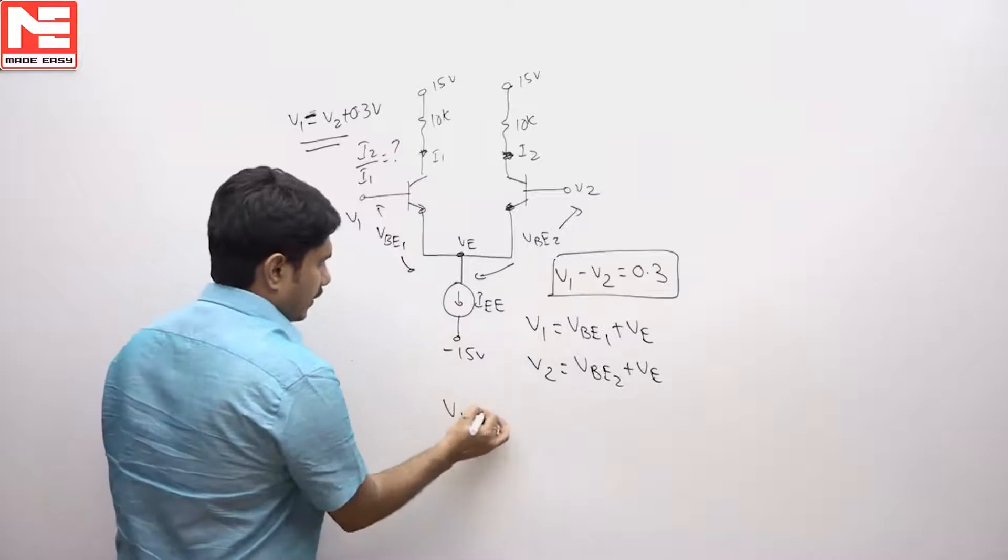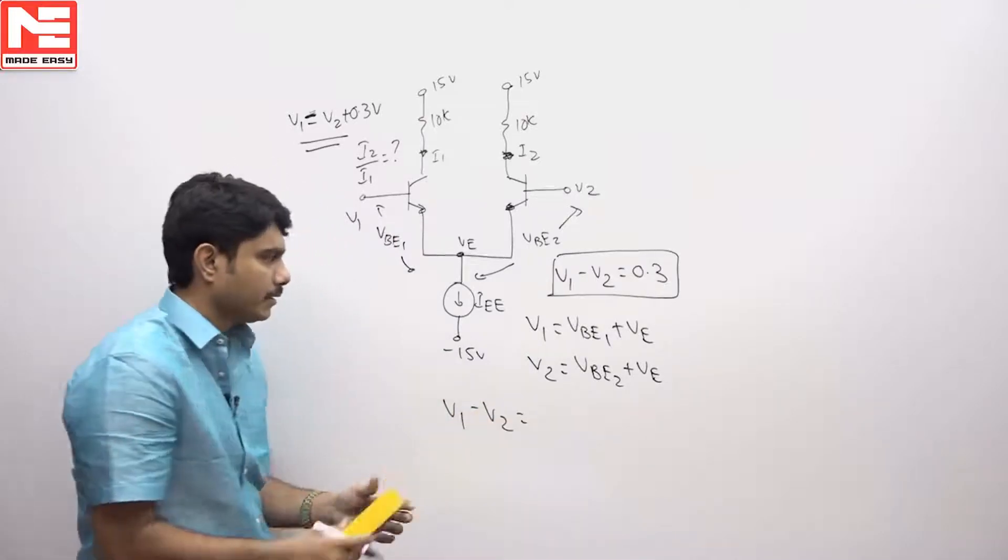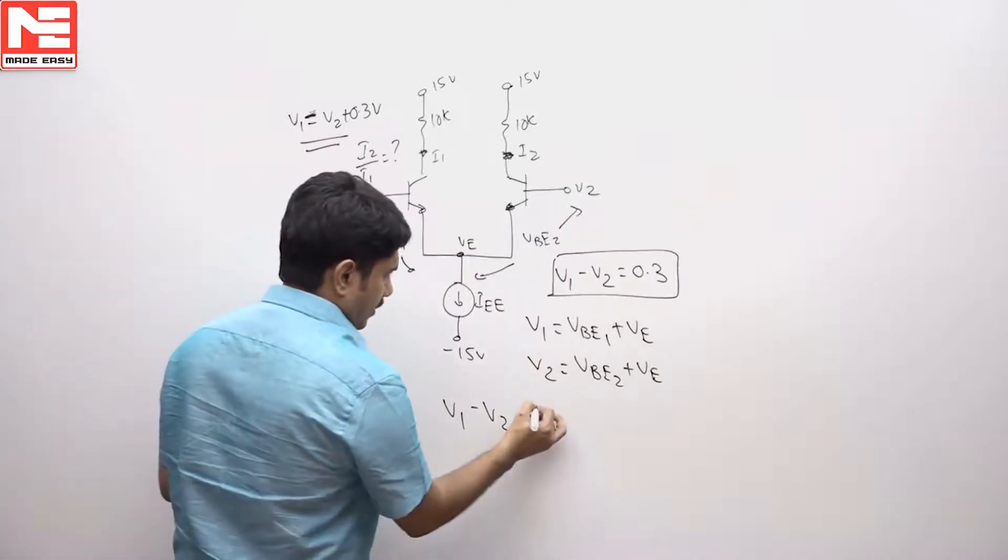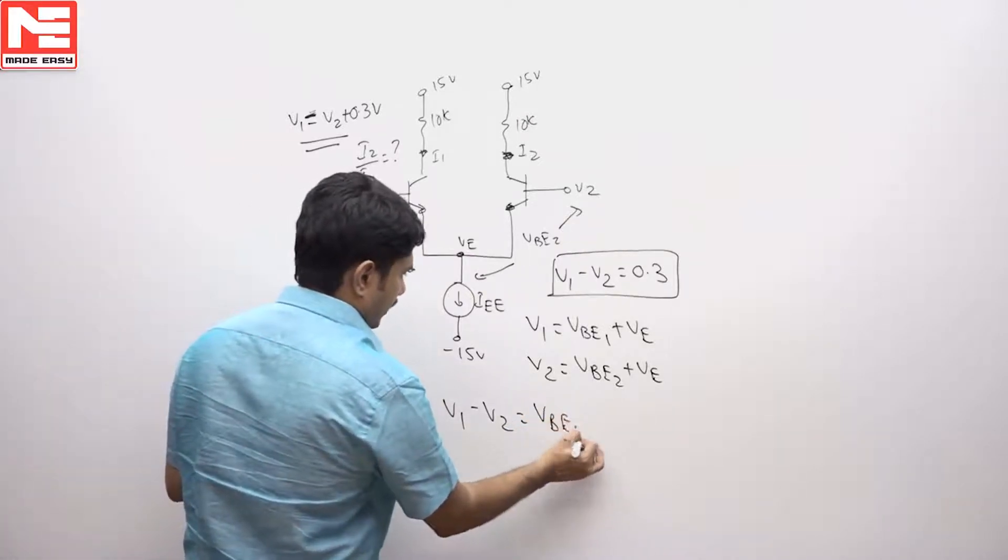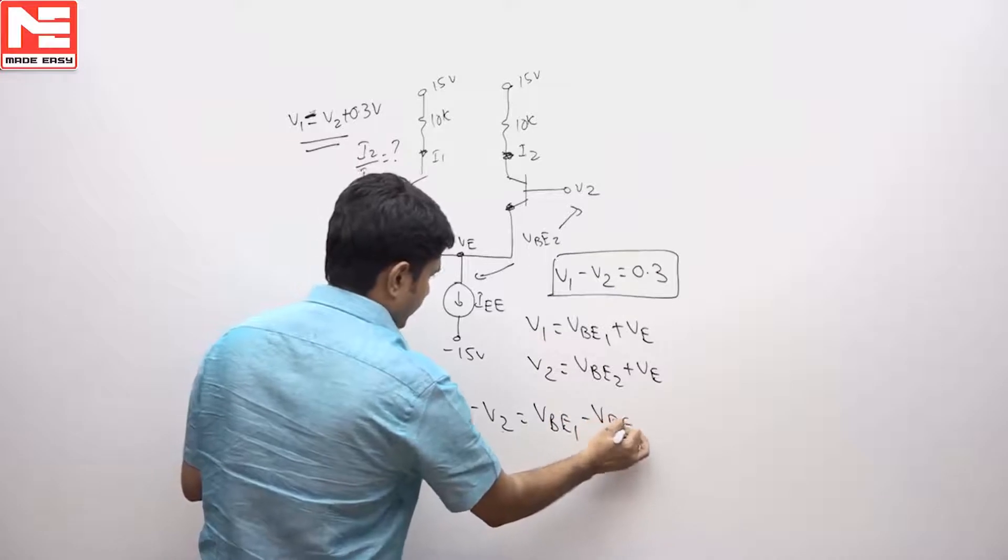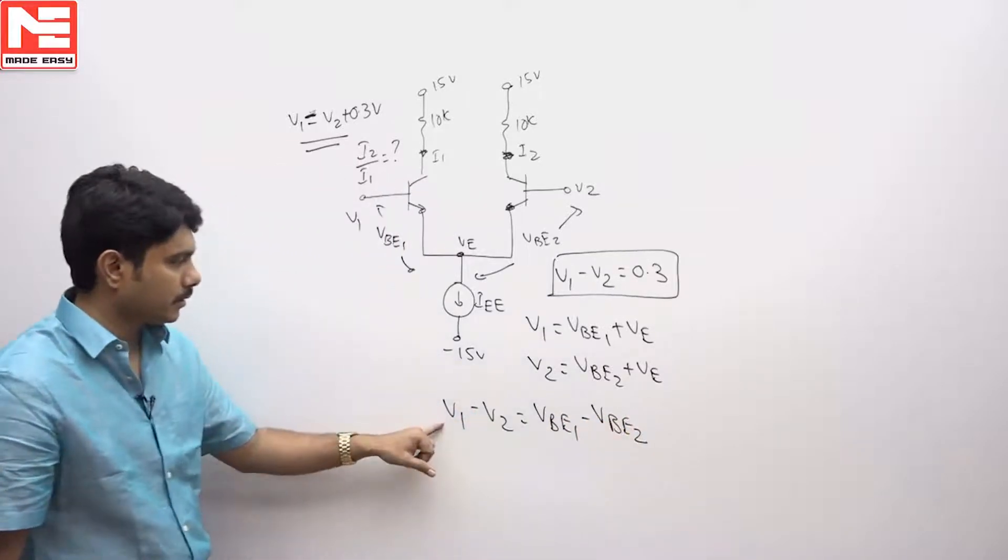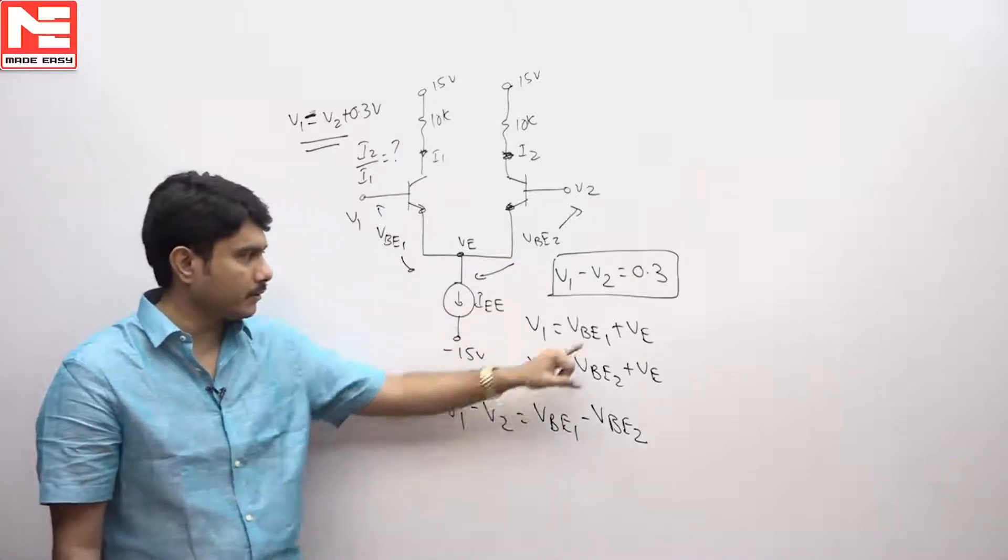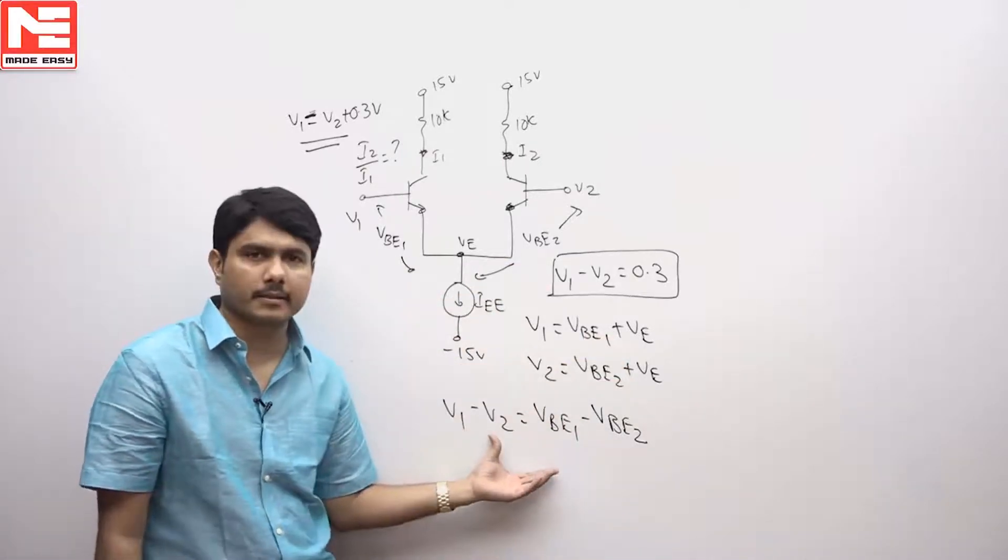So then what is V1 minus V2? We see the difference between these two potentials from the differential amplifier. The answer is VB1 minus VB2. So that means this difference is nothing but the diode potential difference. Why? Because VE, the common term, is canceling.